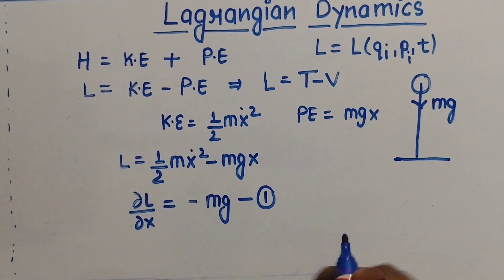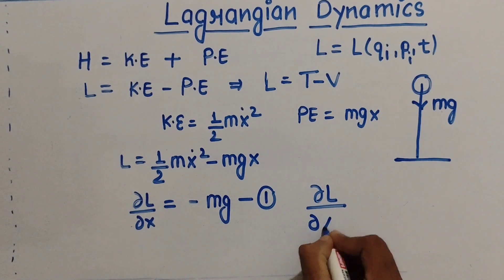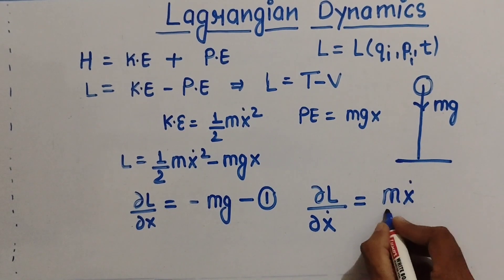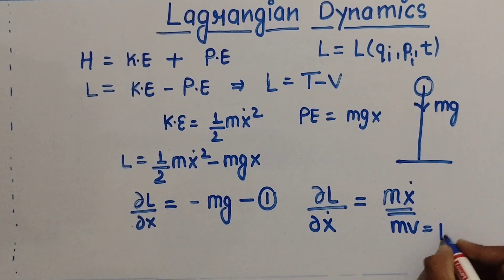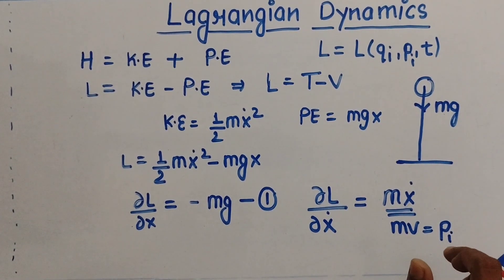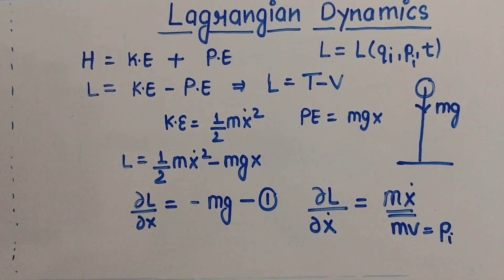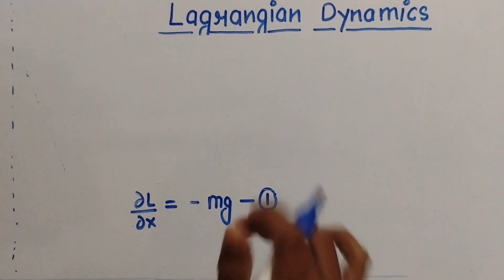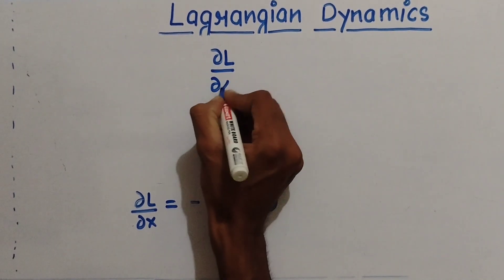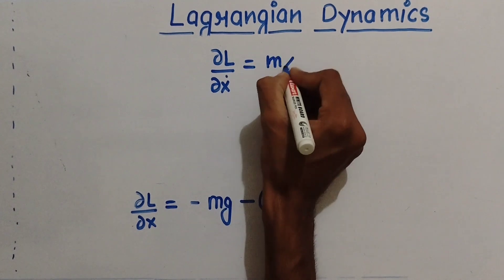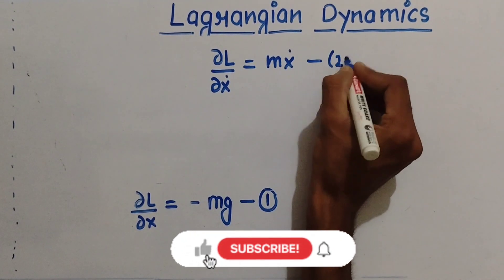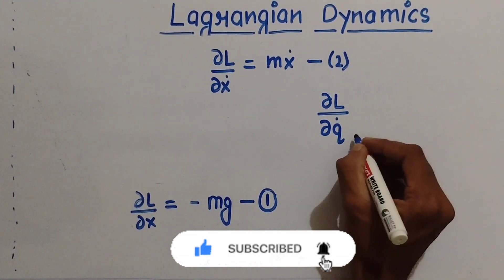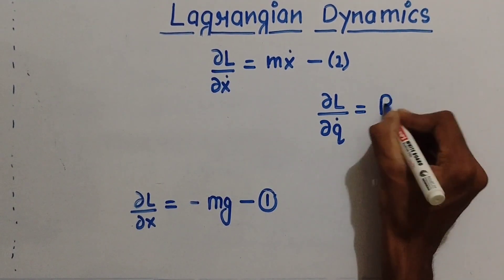Now if I differentiate with respect to x-dot — del L upon del x-dot — what will I get? I will get m x-dot. What is m x-dot? It is the momentum. This is equation 2. In the generalized form, differentiating with respect to q-i-dot gives pi — that is the generalized momentum. This is a generalized formula which will be very useful for you.